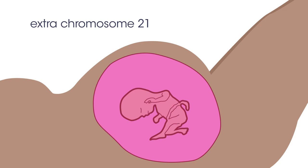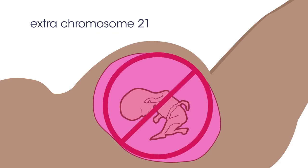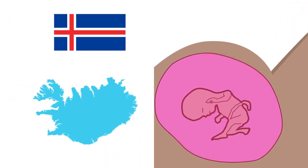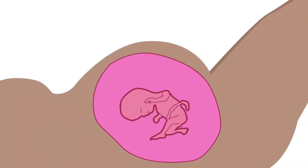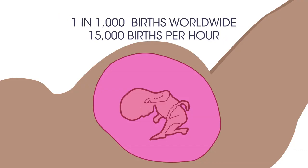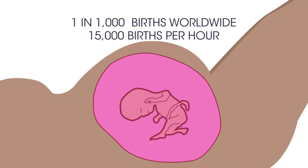In Iceland, this type of genetic screening is widespread and people are counseled when they have the test. Most choose abortion, which means that almost nobody is born with Down syndrome in Iceland. What do you think about this?